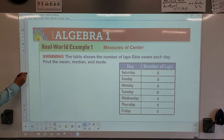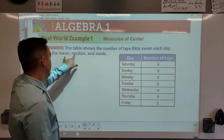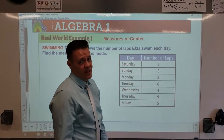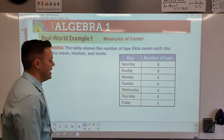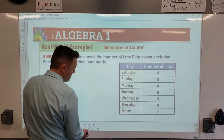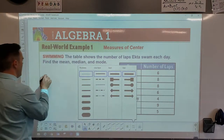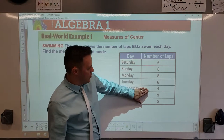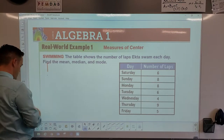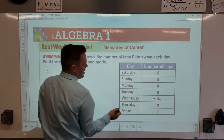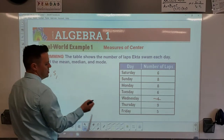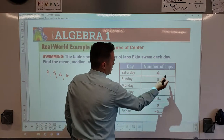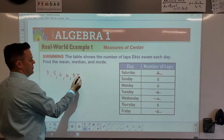Let's find the mean, median, and mode for a dataset about how many laps someone swam each day. First, rearrange the numbers from least to greatest. The lowest value is four and the highest is nine, so starting from the bottom: four, then five, then six and another six — scratch those off — then two eights and a nine.